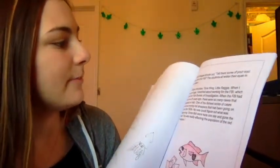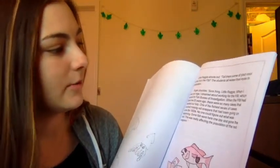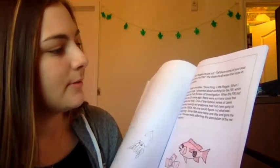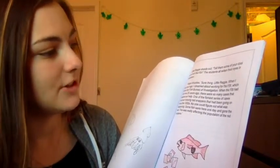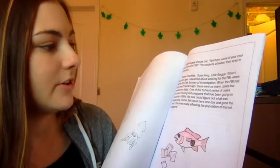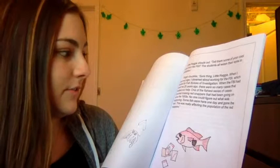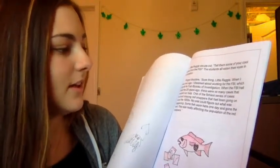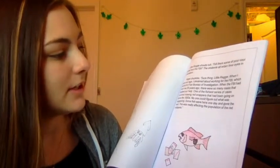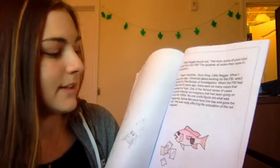Little Reggie shouts out, tell them some of your cool stories from the FBI. The students all widen their eyes in anticipation. Roger chuckles. Sure thing, Little Reggie. When I was your age, I dreamed about working for the FBI, which stands for Fish Bureau of Investigation. When the FBI had hired me 25 years ago, there were so many cases that needed our help. One of the fishiest series of cases involved missing red snappers that had been going on since the 1950s. No one could figure out what was happening. Some fish were here one day and gone the next. This was really affecting the population of the red snappers.